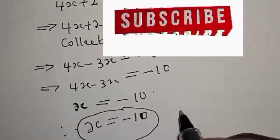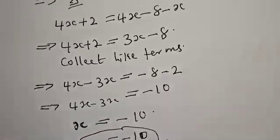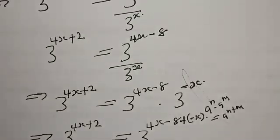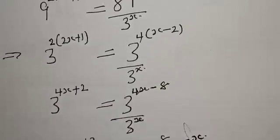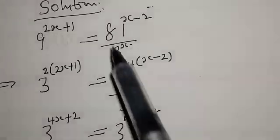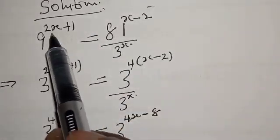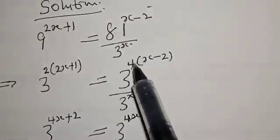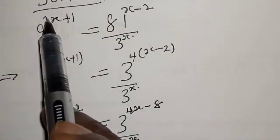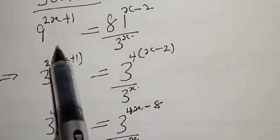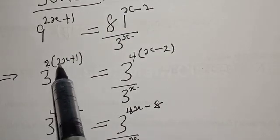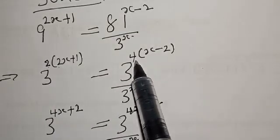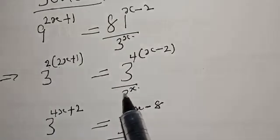Let's quickly check again. This is the given equation: 9 raised to power 2X plus 1 is equal to 81 raised to power X minus 2, over 3 raised to power X. And 9 raised to power 2X plus 1 can be rewritten as 3 squared into 2X plus 1, which is equal to 3 raised to power 4 into X minus 2, over 3 raised to power X.